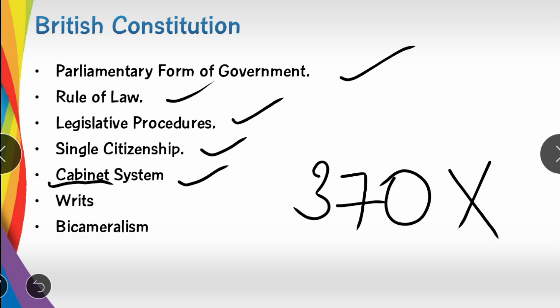The cabinet system is headed by the Prime Minister and other ministers. This cabinet system is the first step adopted from the British Constitution. We have adopted this system into our constitution.